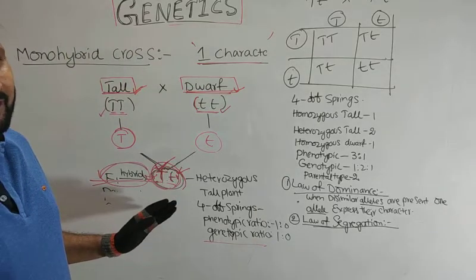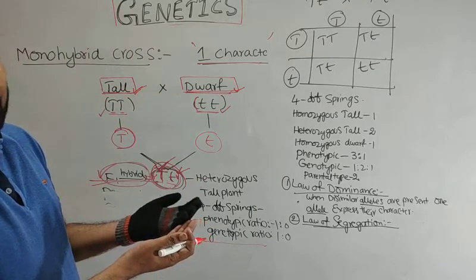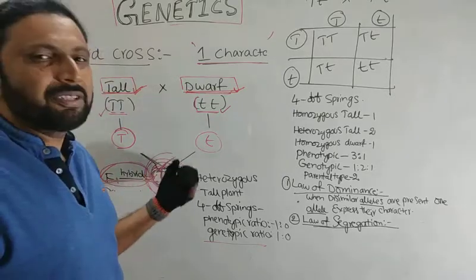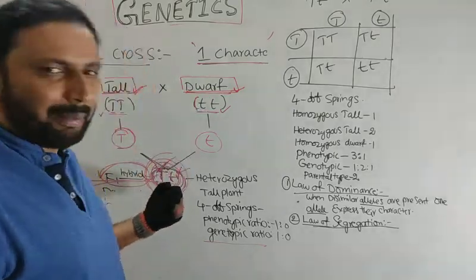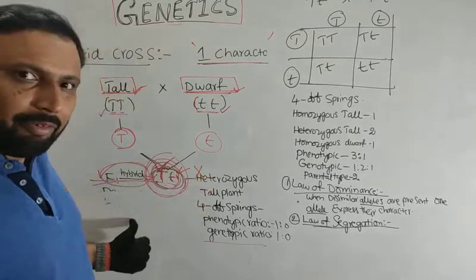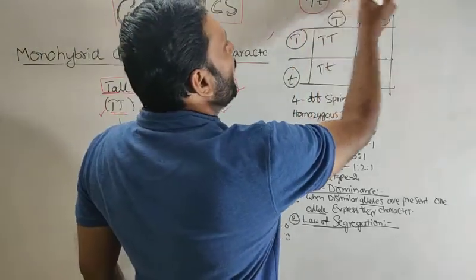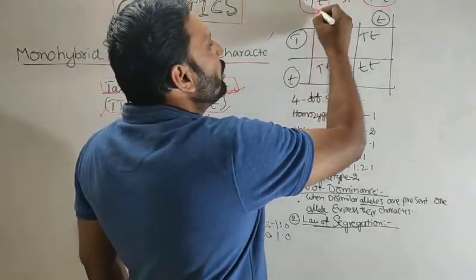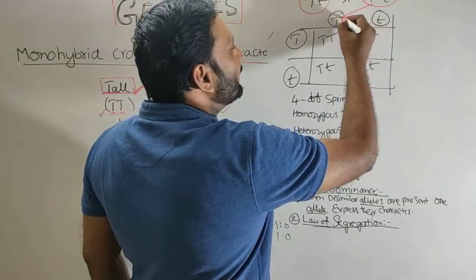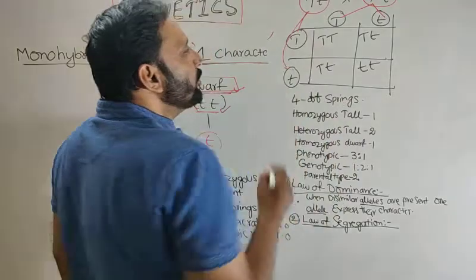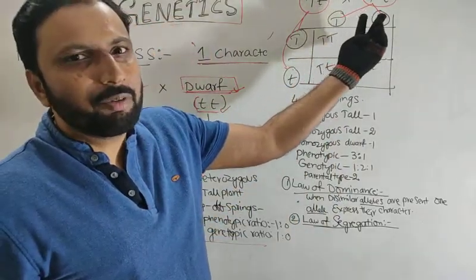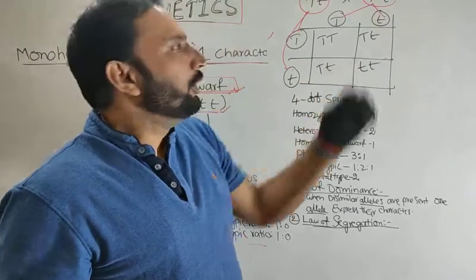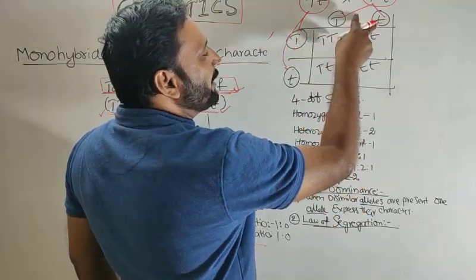Genotypically, only capital T small t — there is no other genotypic condition. These F1 hybrids are formed by artificial cross-pollination, meaning they are formed by hybridization. But when we conduct self-pollination in the F1 hybrids — this is the F1 hybrid undergoing self-pollination — the F1 hybrid contains two types of alleles: capital T and small t. Dissimilar alleles are there, so two types of gametes are forming. These are the two gametes — male and female.